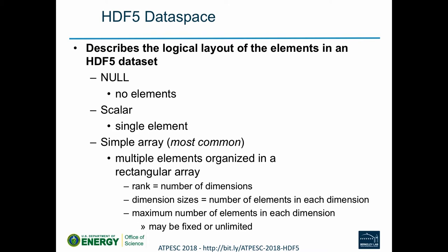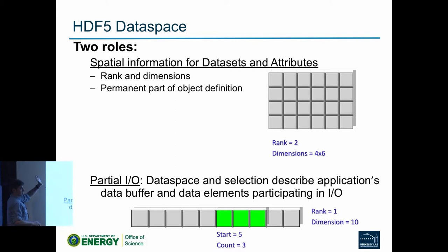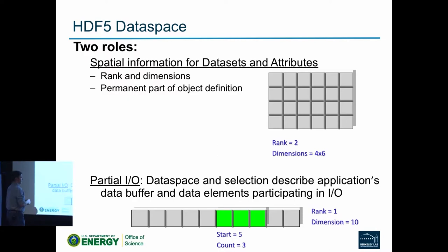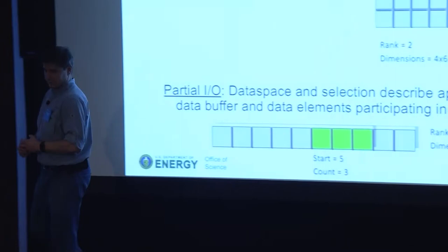We also allow the number of elements in any dimension to be fixed or unlimited — you can have arrays with two, three, or 20 unlimited dimensions. There are two roles for the data space: it describes the array-ness, and it also allows you to specify selections within it. For example, in a one-dimensional 10-element data space, you can select a subset starting at element 5 with a count of three elements.